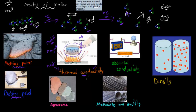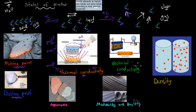Thermal conductivity refers to how well temperature flows, and electrical conductivity refers to how well electricity flows. For example, wood has low electrical conductivity, whereas many metals have high electrical conductivity. So non-metals have lower electrical conductivity than metals.